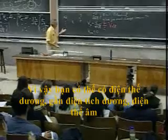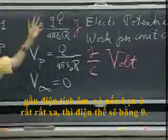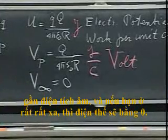So you can have positive potentials near positive charge, negative potentials near negative charge. And if you're very far away, then potential is zero.